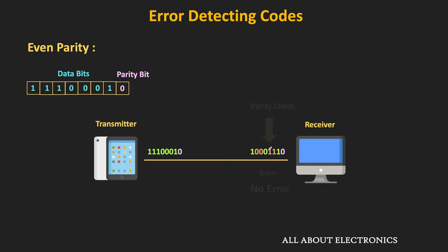Similarly, if there are 4 errors in the received code, then after the parity check, the total number of 1s in the received code is equal to 4. Since it is even for the even parity, the parity checker circuit will again not generate any error and will consider this code as valid — but actually it is invalid. So whenever there is an even number of errors in the received code, it cannot be detected with parity. But if there is an odd number of errors, then using the parity bit it is at least possible to detect that error.